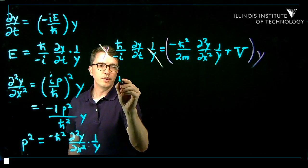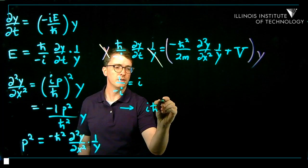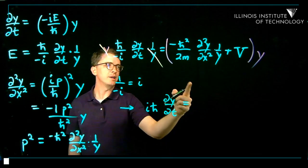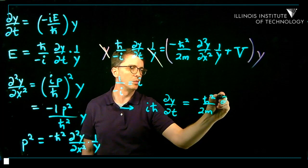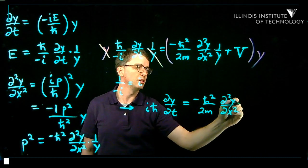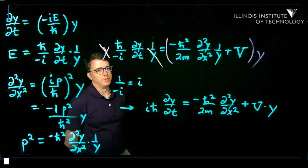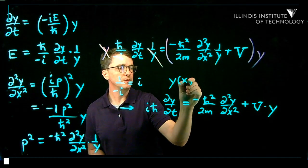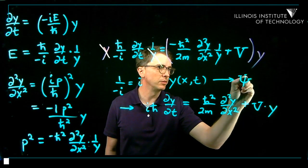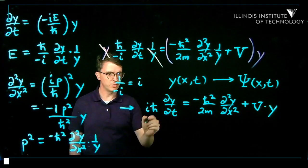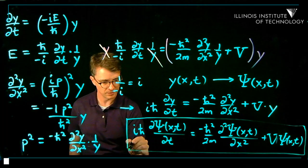Multiplying both sides by y and noting that 1/(−i) = i, on the left side we get iℏ dy/dt. On the right side, distributing y through gives −ℏ²/2m × d²y/dx² + V × y. This is the Schrödinger equation. We used the variable y as a function of x and t, but in quantum mechanics we replace y with the capital Greek letter ψ (psi) as a function of x and t. So there you have it — out comes the Schrödinger equation.